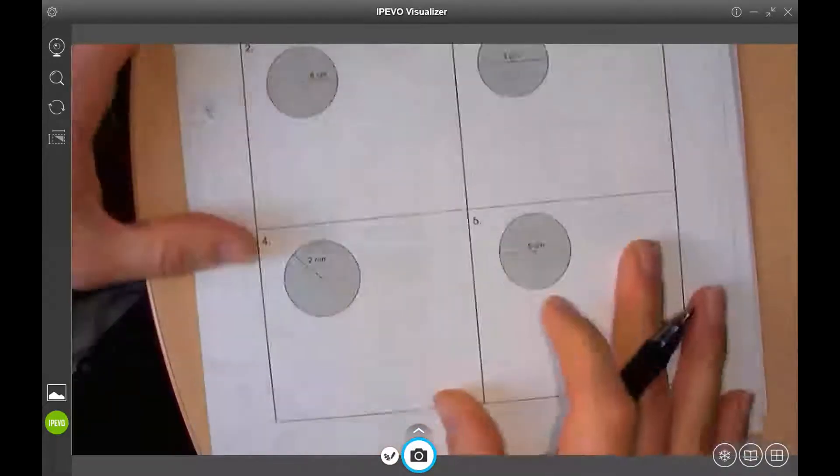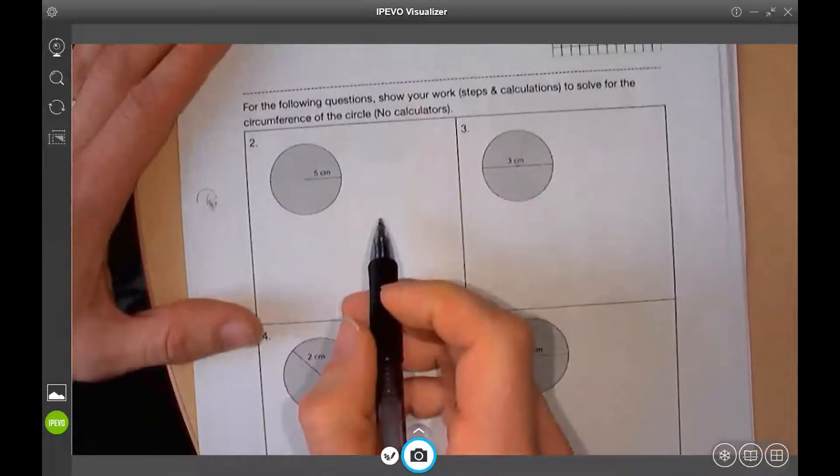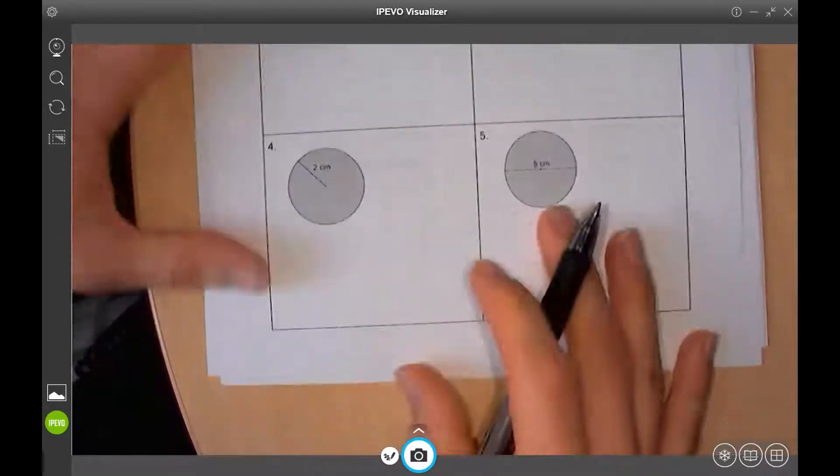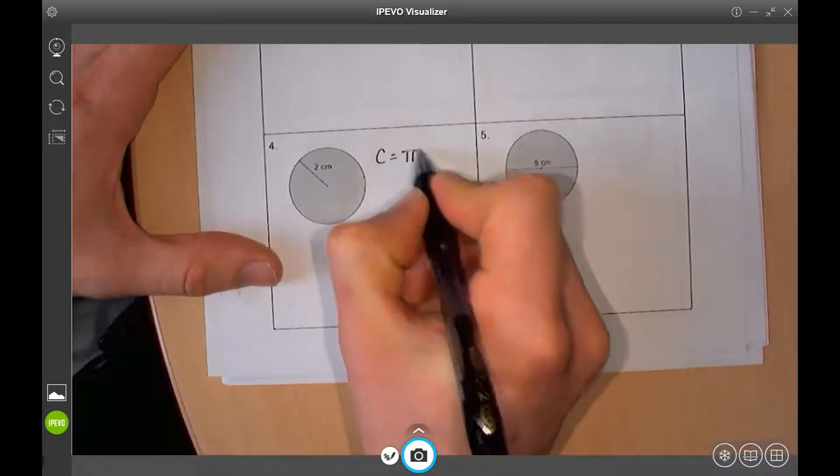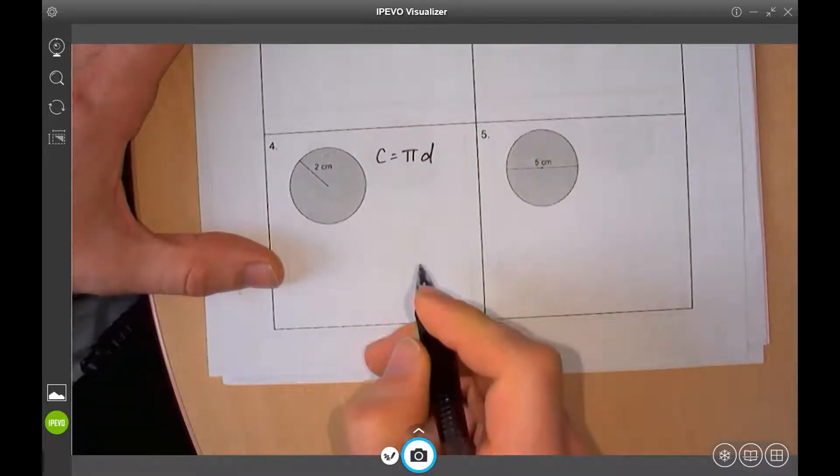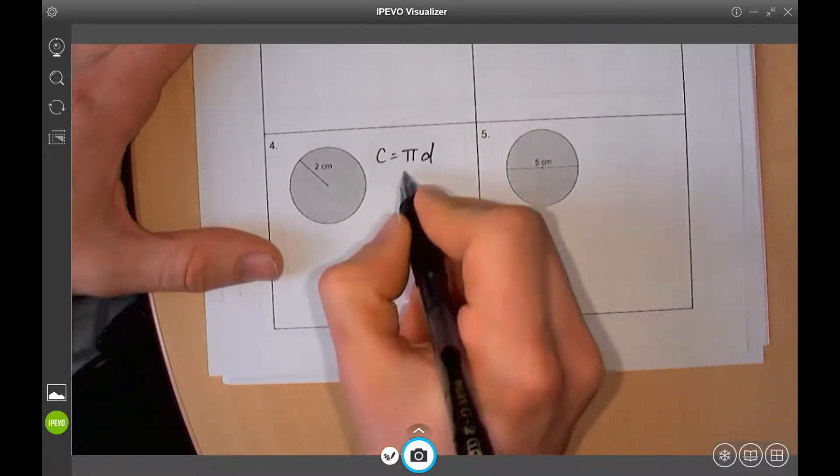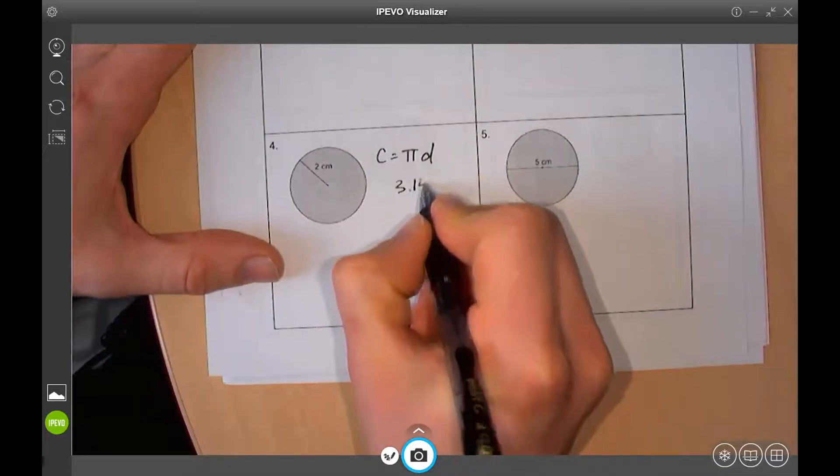Okay, so when we solve these questions, I already did this example for you. Let's go down to this one here. When you're doing circumference, it's pi times diameter. Pi times diameter. Pi is 3.14. What is the diameter?